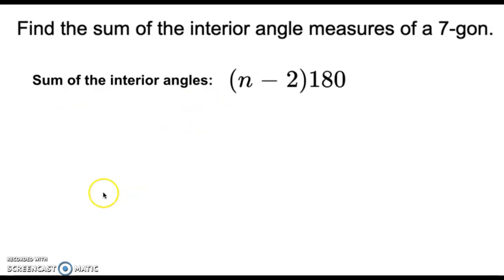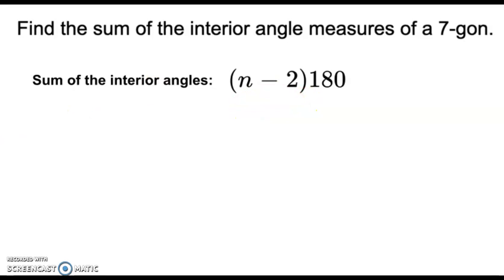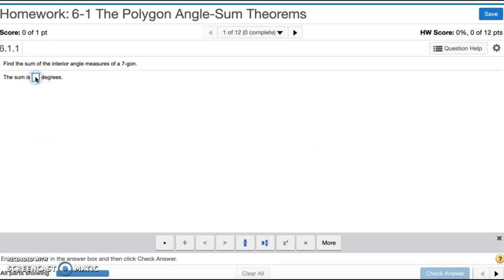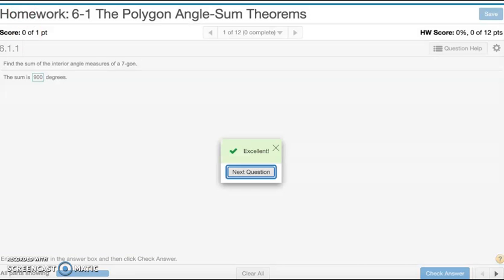n is the number of sides. This one, the number of sides is 7. So 7 goes in for n, so 7 minus 2 is 5, and 5 times 180 is 900. So the sum for number one is 900.